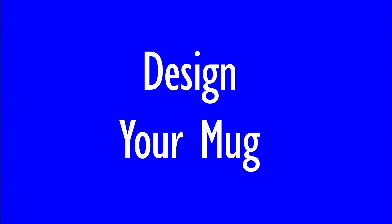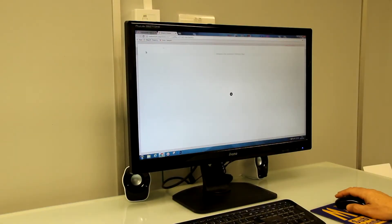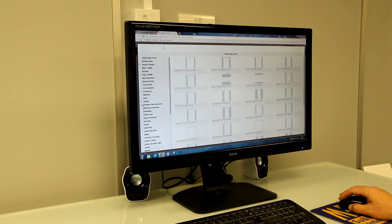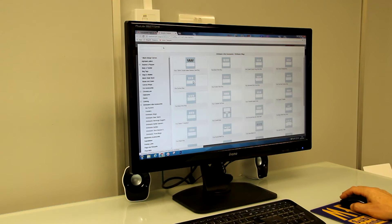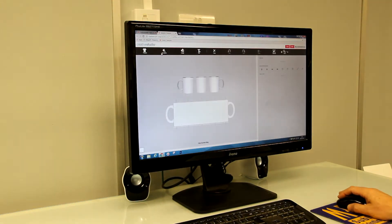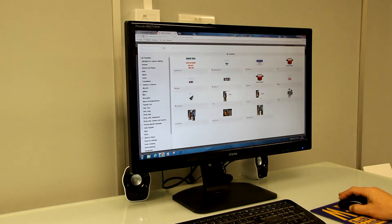For the mug design many software packages can be used but one of the best options is Sawgrass's Creative Studio. This is a sophisticated free to use web-based design package specifically for sublimation printing. It has a vast amount of preloaded product templates making your design layout much easier.